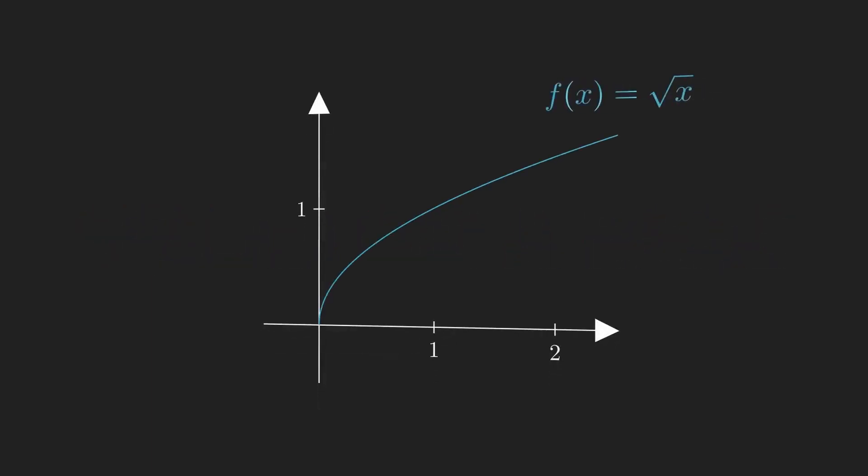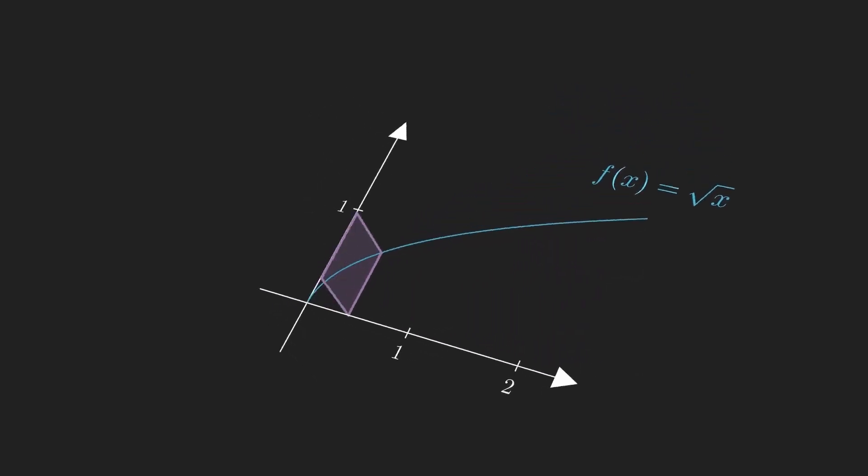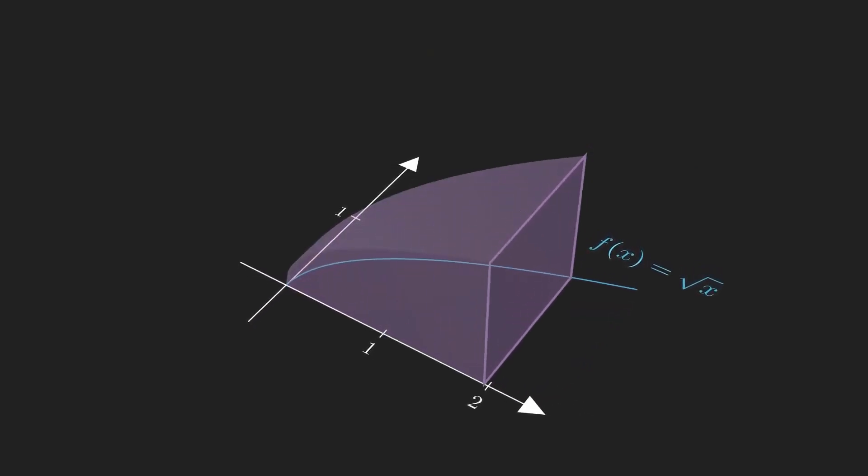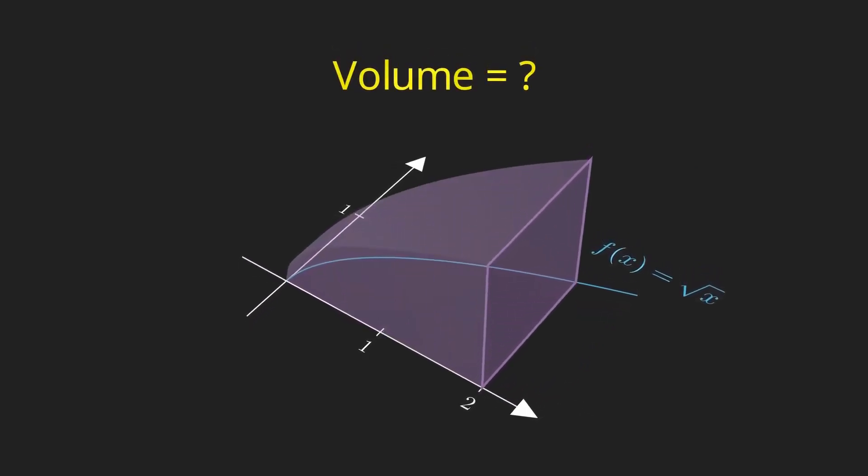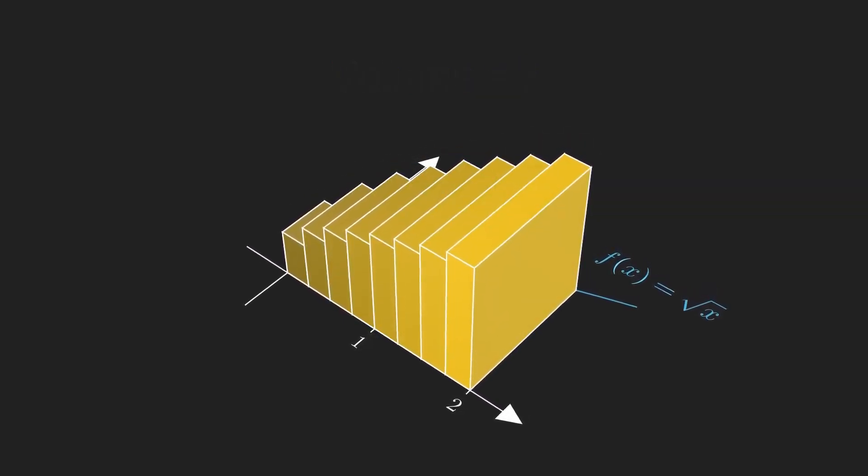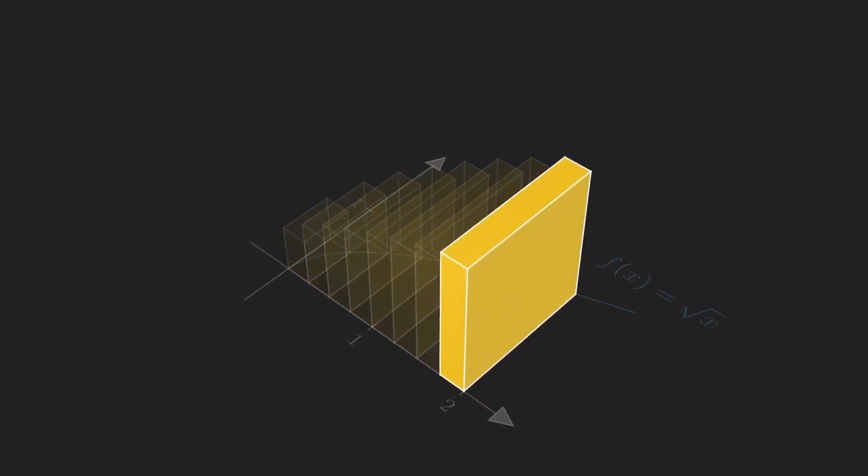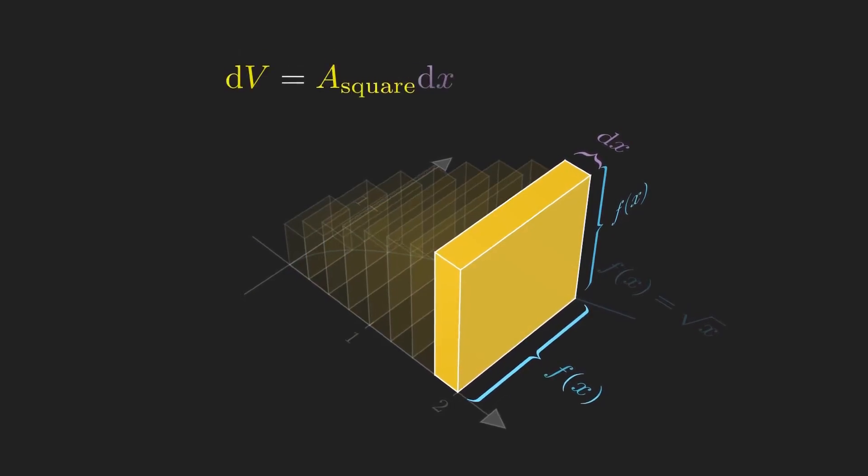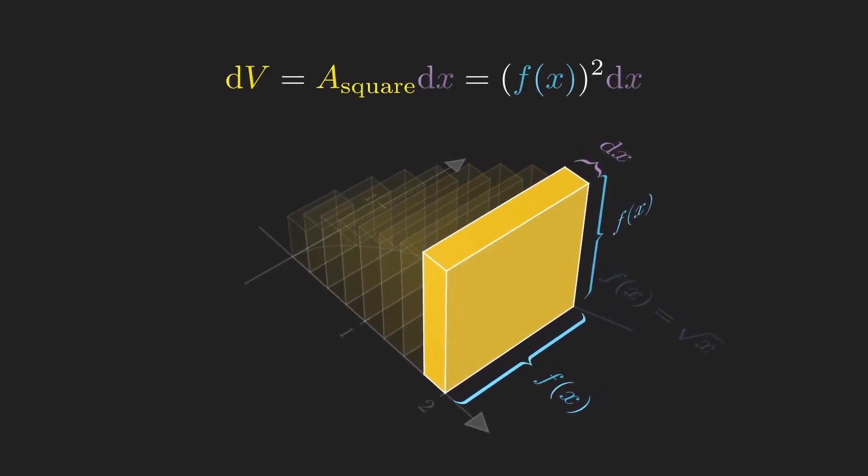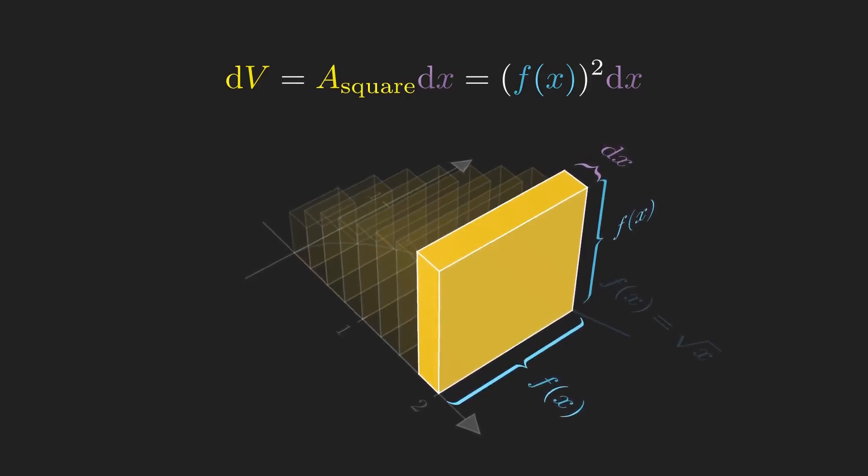Let's take the function f of x equals root x one last time for our final case and let this be the base of a solid. Now we can make the cross sectionals to be any shape. Let's choose a square and ask what the volume of such a solid is. If we partition rectangular prisms where we have a side of a square, well we know that the area or the volume of this prism is just the function value squared times dx.